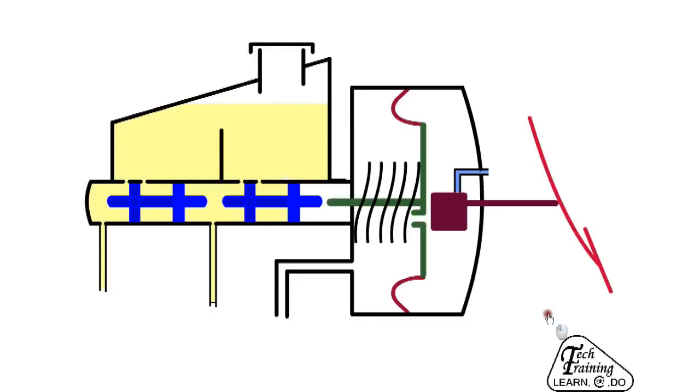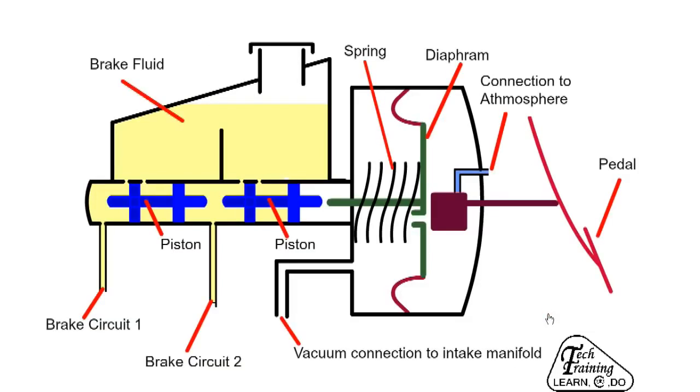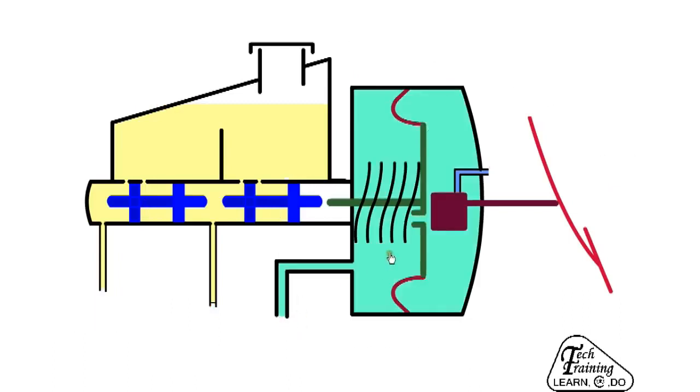As disc brakes do not have a wedging action similar to drum brakes, considerable effort is required to operate them. Usually a car will have a braking power assist system. This uses vacuum from the air intake system. When the car is started, there is vacuum on both sides of the diaphragm.